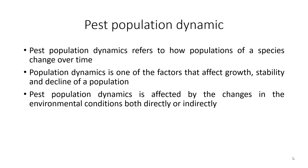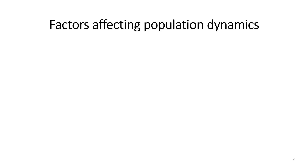Changes in the environment may affect the pest population indirectly by altering the physiology of a host. For instance, under water stress, the nutritional quality of the host plant decreases, thereby making it less appealing as well as less digestible to the insect pest as the foliage becomes tougher.